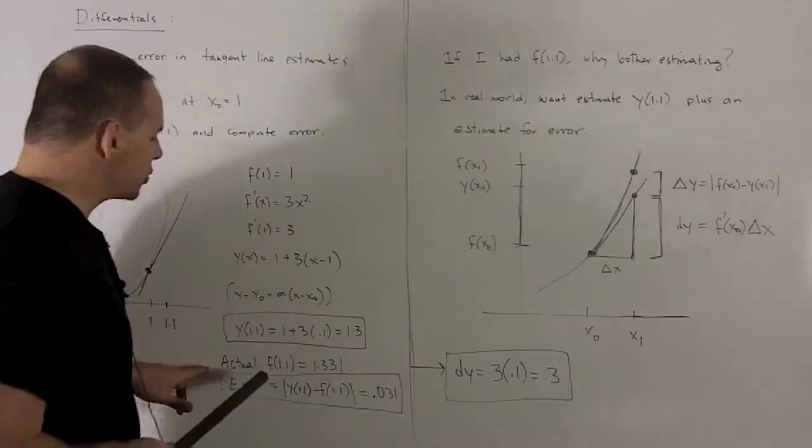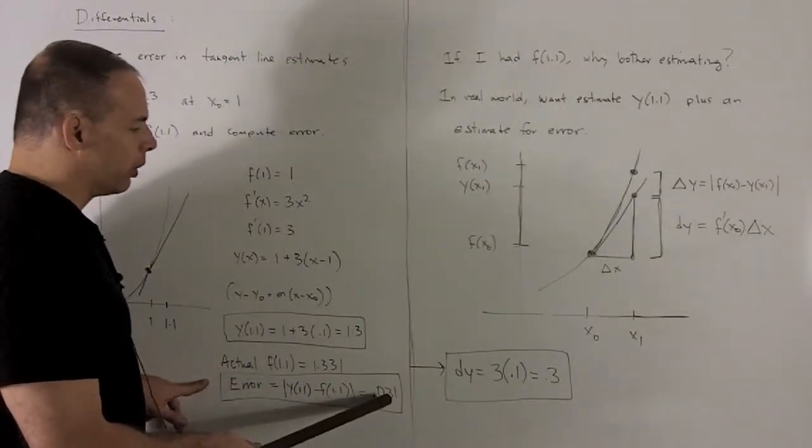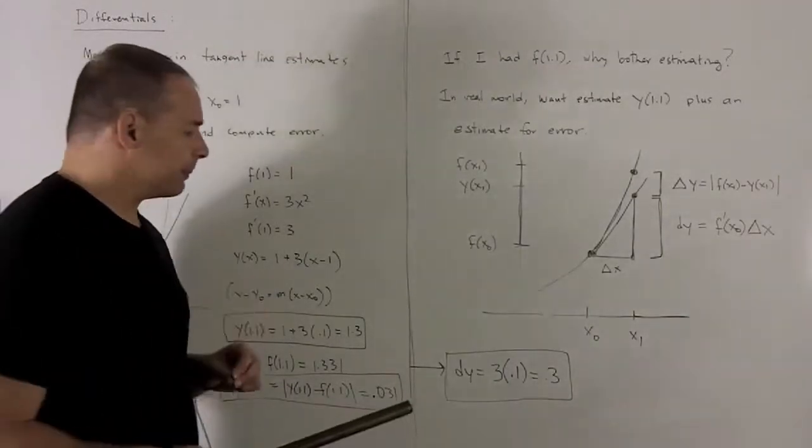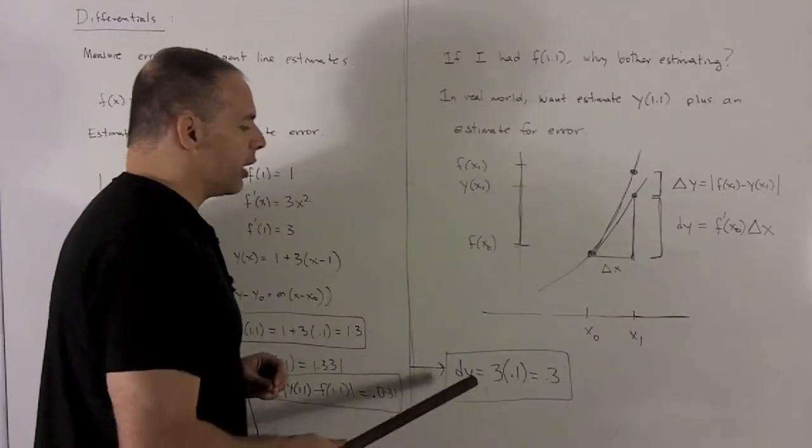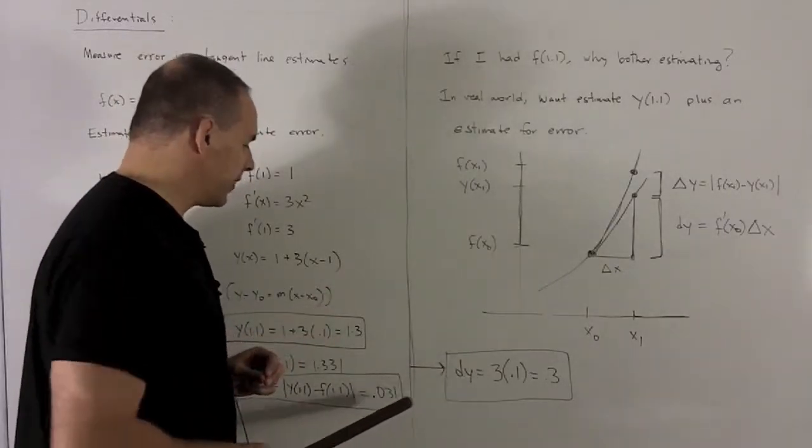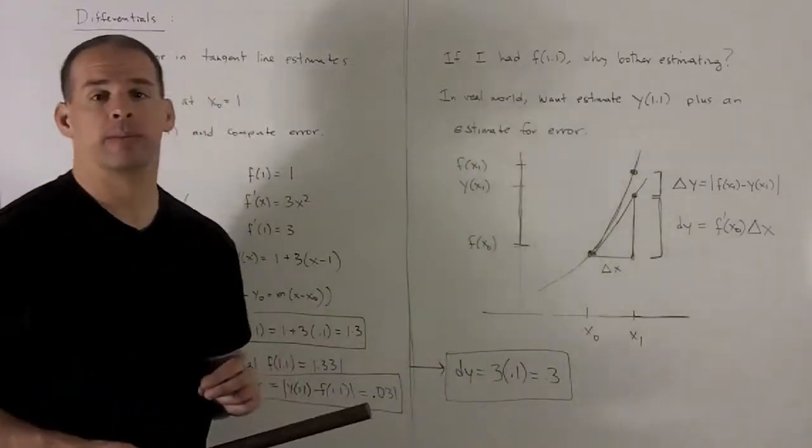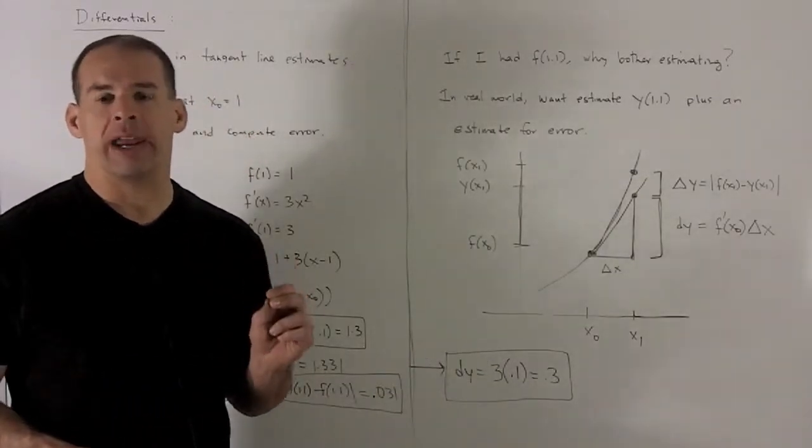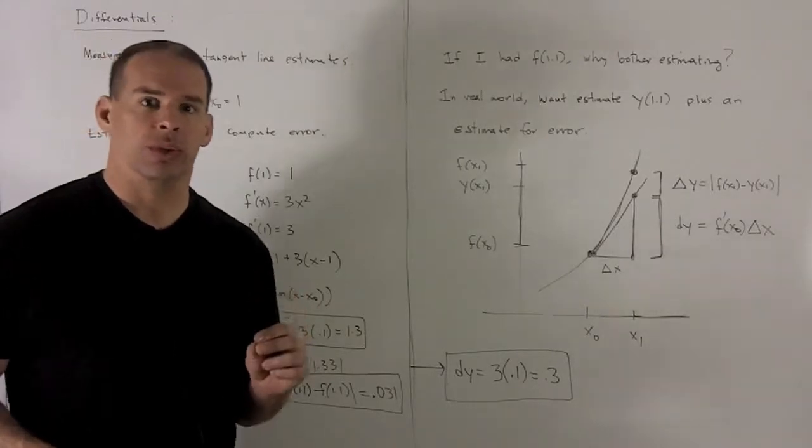Now notice our actual error is much smaller than 0.3, but that's fine. This is just an estimate of the error. And what we would want here is that our actual error be smaller than this. And this is definitely smaller than 0.3. So our estimate may not be great, but at least it's an estimate that we can use.